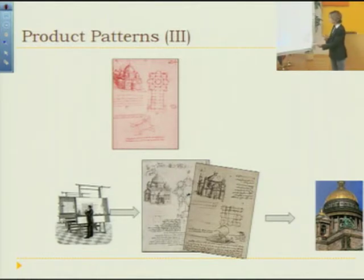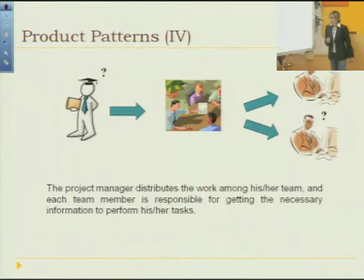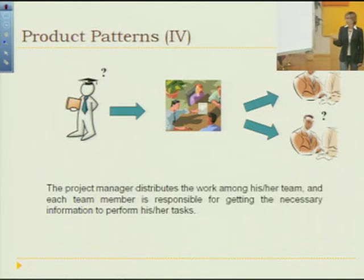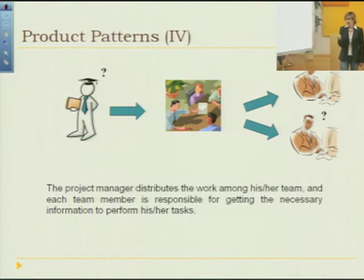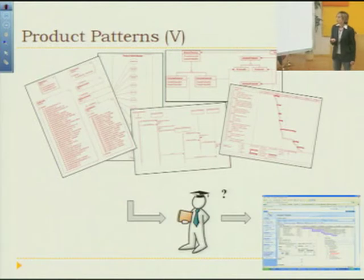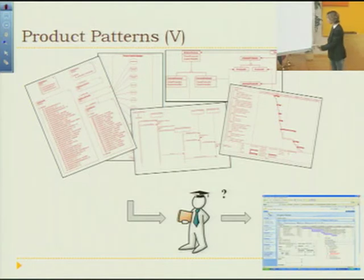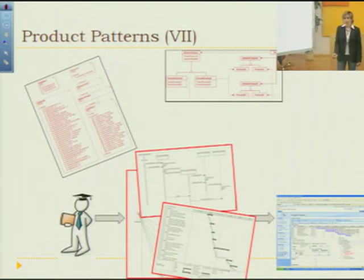What happens in a software project is that the project manager distributes the work among the team, who has to decide how to produce the products related with the activities assigned. We see product patterns as proven extracted structures to be reused in order to produce new projects.